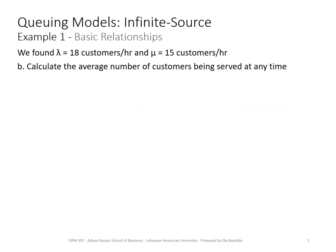We found in the previous slide that lambda equals 18, mu equals 15. Let's also find this ratio that I told you about, we're going to use it a lot. So lambda over mu, 18 over 15, we have 1.2. We're going to see that a lot. Now part B: calculate the average number of customers being served at any time. Remember what's that? This is r, and r equals lambda over mu.